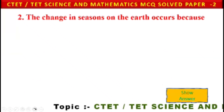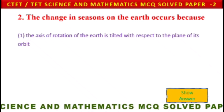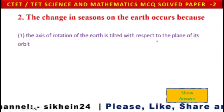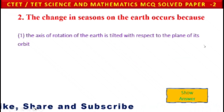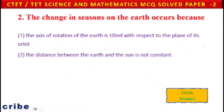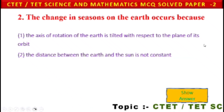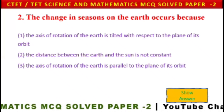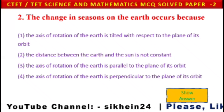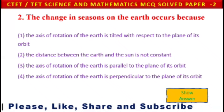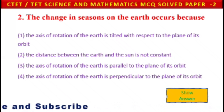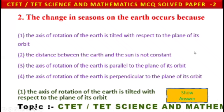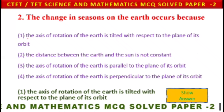Next question: The change in seasons on Earth occurs because — 1) the axis of rotation of the Earth is tilted with respect to the plane of its orbit, 2) the distance between Earth and Sun is not constant, 3) the axis of rotation is parallel to the plane of its orbit, or 4) the axis is perpendicular to the plane. Option 1 is the correct answer.